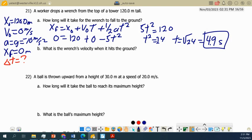What's the wrench's velocity when it hits the ground? There's a couple different ways we can do this. Let's again look at our variables. We now know our time here is 4.9 seconds. This time we're being asked for what is vf.